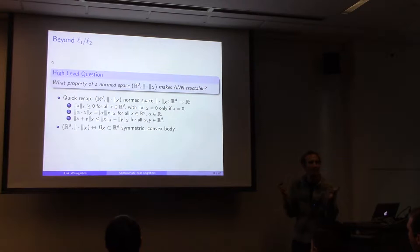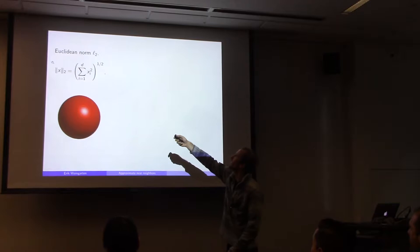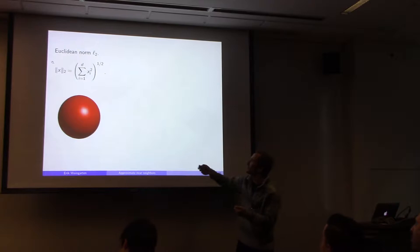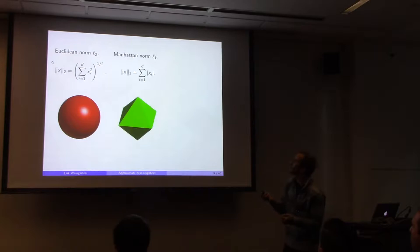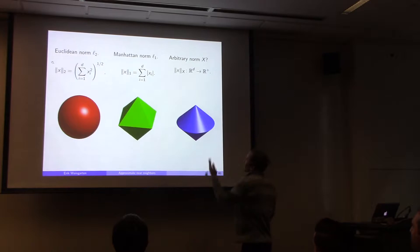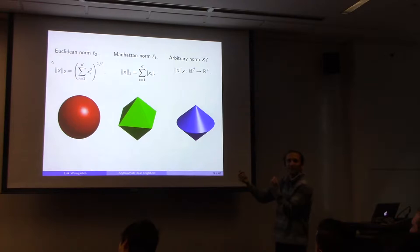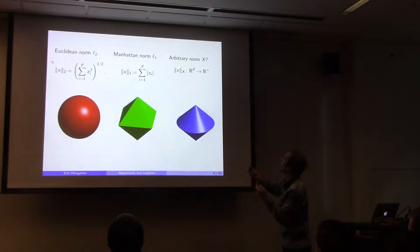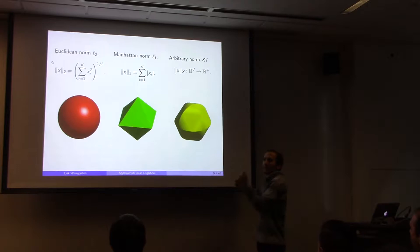There's a natural correspondence between norm spaces and symmetric convex bodies: take all vectors with distance at most 1 from the origin — the unit ball. For L2 the unit ball is the usual sphere; for L1 it's the cross-polytope (Manhattan norm, sum of absolute values). For arbitrary norms, we have arbitrary convex bodies symmetric across the origin. The question becomes: what geometry of this convex body allows efficient data structures?